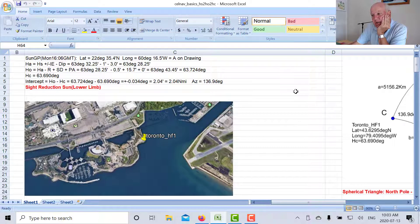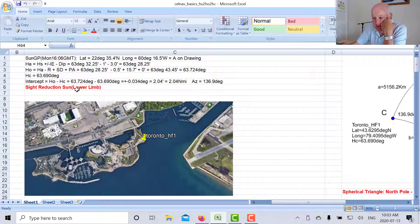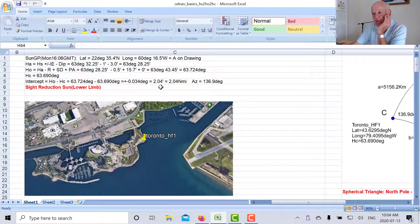The next step will be to use the difference. The difference between HO and HC is called the intercept. So in our particular case it's 63.724 degrees minus 63.69, it turns out to be about 2.04 minutes.